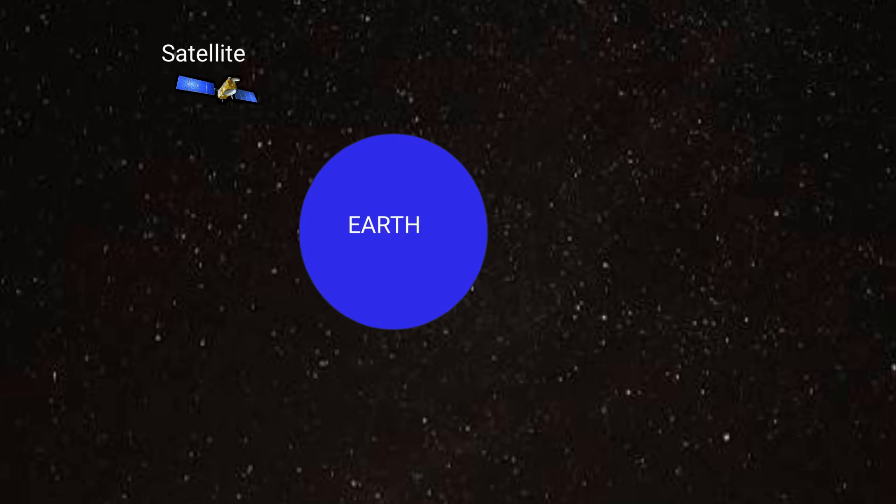A satellite is an object that moves in an orbit around the earth or around other planets or stars in the space. Satellites can be artificial or natural. For example, moon is a natural satellite of earth. In space technology, we are only going to discuss about the artificial or man-made satellites.